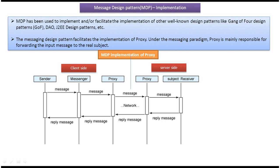We will see this in the sequence diagram. Here you can see this is the client side up to this part. On the client side you can see the sender, messenger, and client side proxy. And on the server side there is the server side proxy and the receiver. Now the sender wants to send some message to the receiver for some kind of processing, so the sender first sends the message to the messenger.